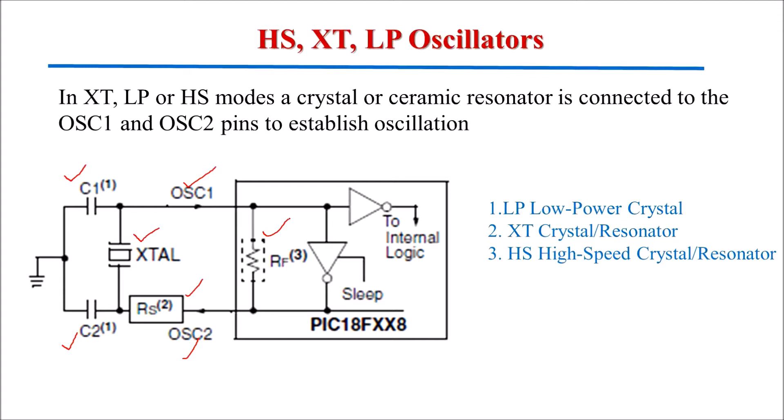These 3 types of oscillator configurations use an external crystal connected to generate a clock signal. The value of RL depends upon what type and frequency crystal we are selecting. The RS resistor is generally required in HS mode as well as in XT mode. This is used to avoid over-driving crystals with low drive level specifications.